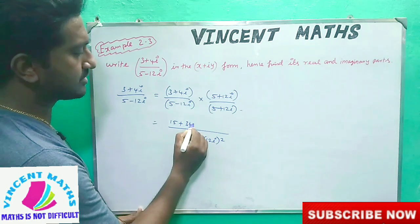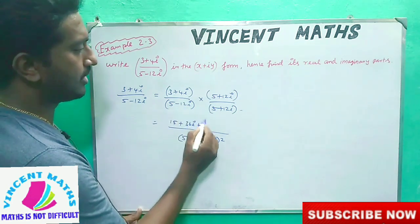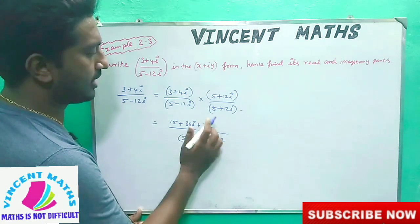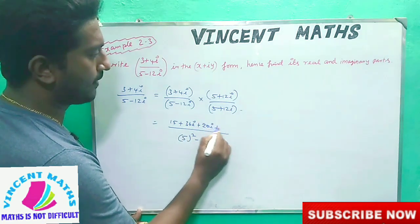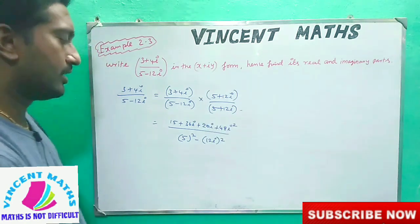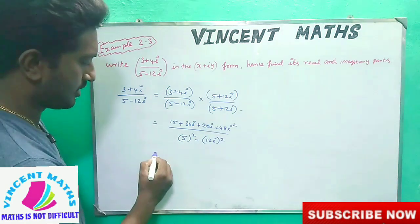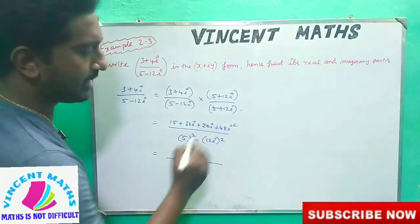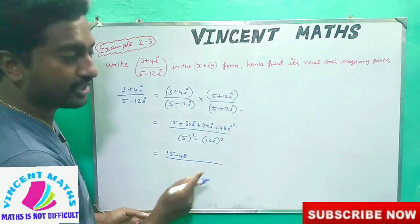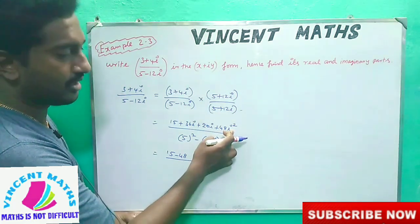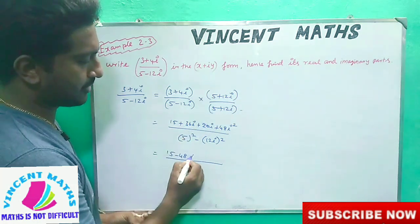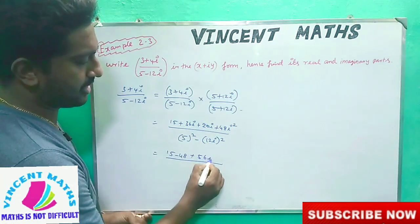...36i, then 20i, then 48i squared. Now, i squared equals minus 1. So 48i squared becomes minus 48. We get 15 minus 48, and we need to add the imaginary parts: 36i plus 20i gives 56i.